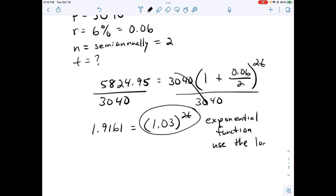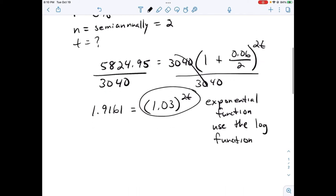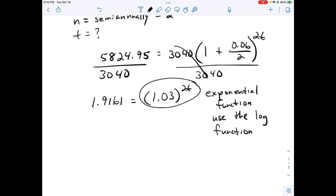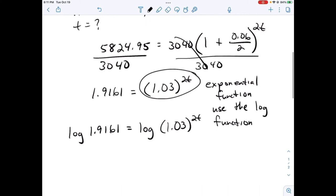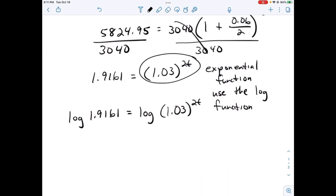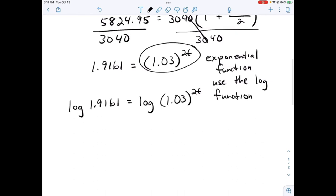We're going to take the log of both sides. Log base 10. Anytime you take the log of both sides, we're assuming it's log base 10. So log of 1.9161 equals log of 1.03 to the power of 2t. The exponent here is simply going to come down.